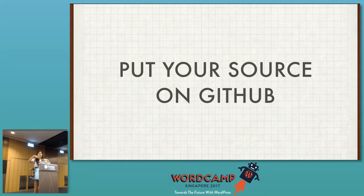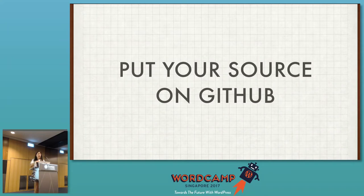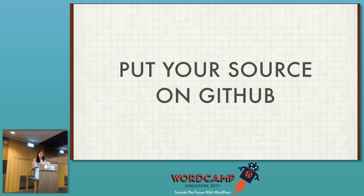One more tip: if you put your source code on GitHub, it's easier to collaborate. Sometimes on the WordPress plugin repository I find a string error for translation and ask them to fix it, but they don't answer. But if you have your source code on GitHub, it's easier to send a pull request.